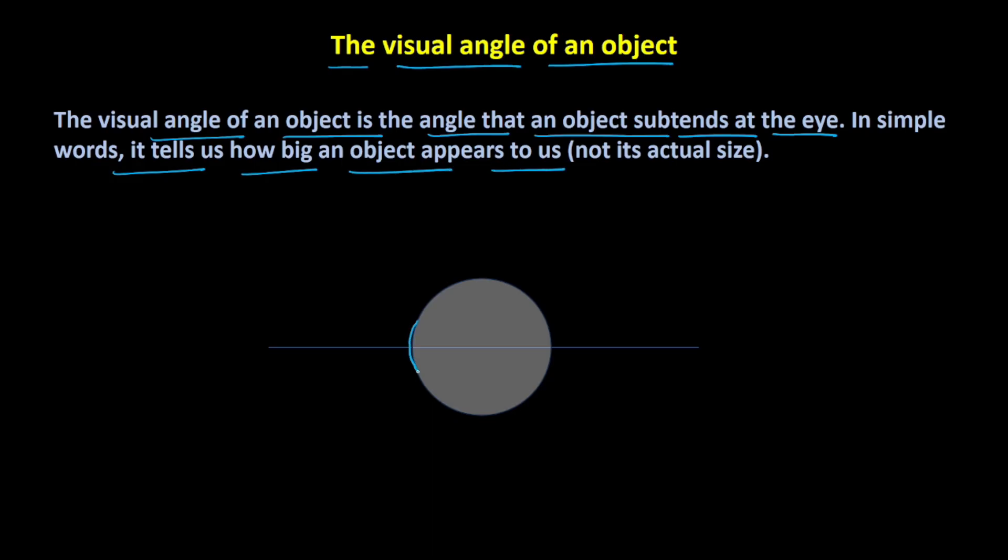For example, this is the human eye and this is an object in front of the human eye. Now, if I draw this particular angle, let's say I call this as theta, so this is the angle that the object is subtending at the eye.